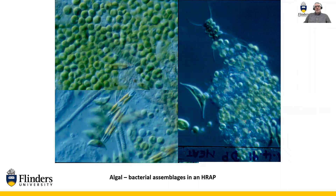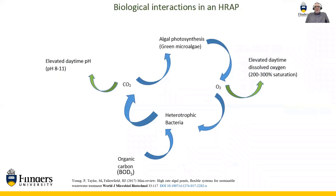These are the workhorses of the treatment system. This micrograph shows the assemblage you see in a high-rate pond — what I'd call the weed species of algae. We don't inoculate the ponds; these organisms turn up in the wastewater. You can see things like chlorella, a few diatoms, and Scenedesmus. Interestingly, these aren't free planktonic algae as single cells; they're usually embedded in a matrix comprising bacteria, fungi, and some protozoa — and the algae and that matrix are in close association.